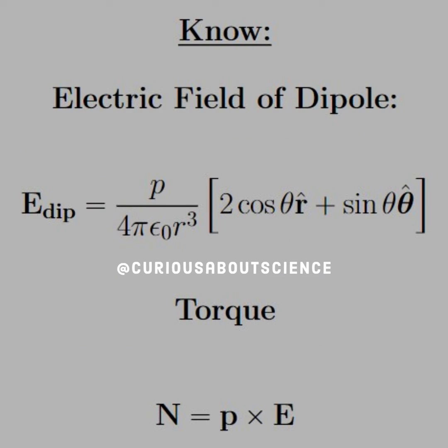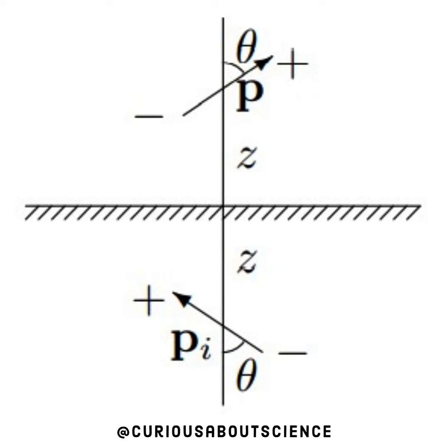What we should know for the problem is the electric field of a dipole and the torque on a dipole. Before we consider any calculations, let's first have a conceptual check and draw the situation out. We have an infinite conducting plane, so automatically I think of method of images. How do we set that up for this problem?